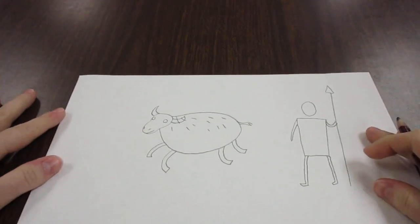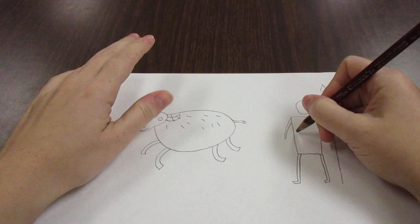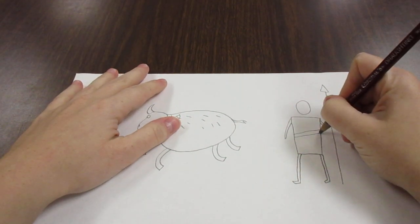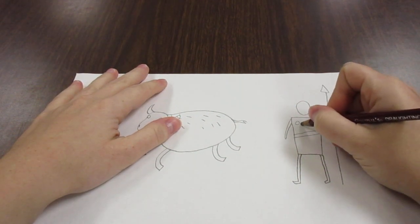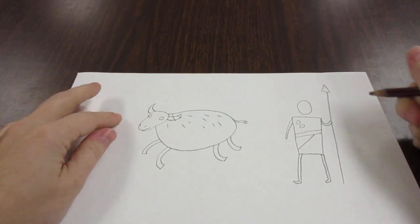There we go, so we got our buffalo and our hunter. Our hunter could have some kind of animal skins or some kind of patterns on, so we could put some designs on him. Just put a few circles and lines.